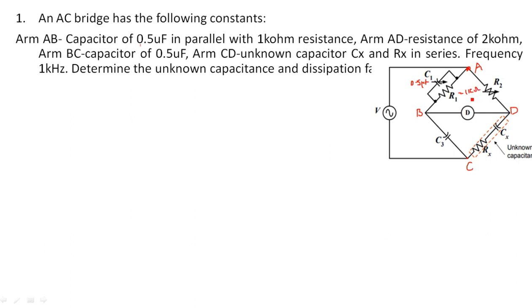Arm AD has a resistance of 2 kilo ohms only. Arm BC has a capacitor of 0.5 microfarad. Arm CD is the unknown - that is Cx and Rx in series - and our aim is to calculate Rx and Cx. The operating frequency is also given as 1 kilo hertz.